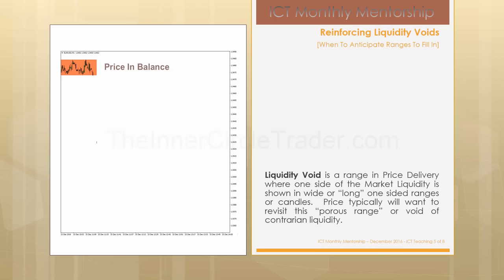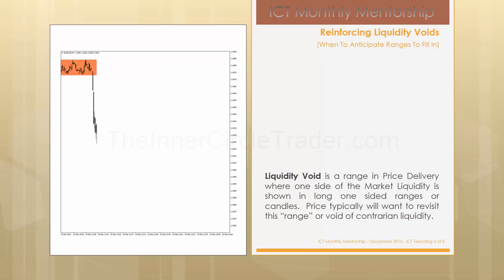Price is in a point of equilibrium. At some point, price will eventually move out of a consolidation. When this occurs, we know that there's participation in the form of smart money. Smart money is the only one that has the deep enough pockets to cause price to move out of consolidations, or move at all in any significant manner. This causes a price imbalance, or as we call it, displacement.